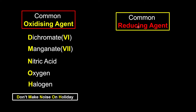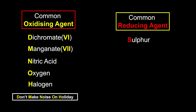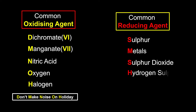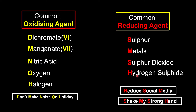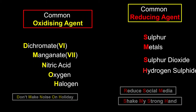We also have some common reducing agents. In order to be a good reducing agent, it must undergo the process of oxidation, which means losing electrons. To be good at donating electrons, it must be like metals, which have very high electropositivity. Some common reducing agents in our syllabus are sulfur, metals, sulfur dioxide, and hydrogen sulfite. To memorize: 'RSM' — reduce social media — or 'SMSH' — check my strong hand.